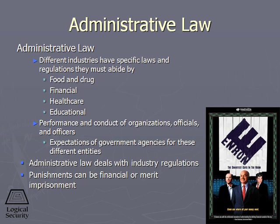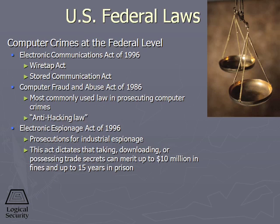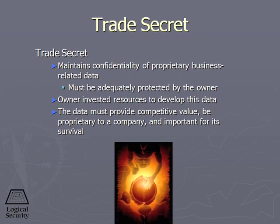Here are some examples of U.S. federal laws that address computer crimes — you should have a ballpark idea on these laws. Now we're going to look at laws protecting intellectual property. The first one is called the trade secret — a secret that provides competitive edge, is proprietary to a specific company, and is important for that company's survival. The company that has the trade secret must adequately protect it. If you publish your trade secret, you can't sue somebody for stealing and using it.